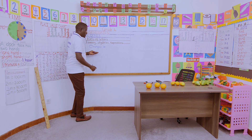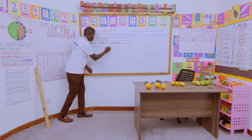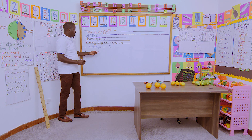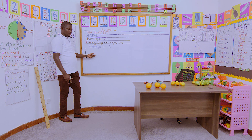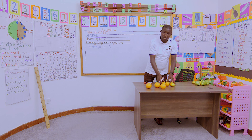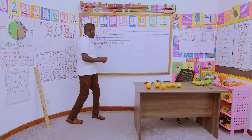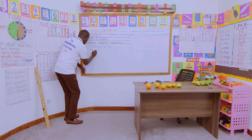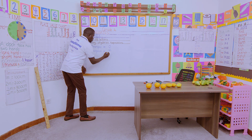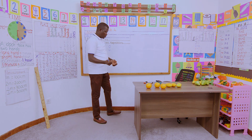Which letter can we use to represent oranges? We can show oranges by the letter O. So we have O oranges — that represents the number of oranges we have. Then we also have some mangoes, and for mangoes we can use the letter M to show mangoes.